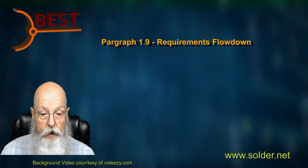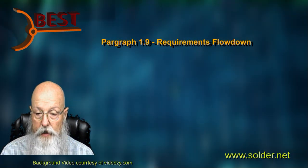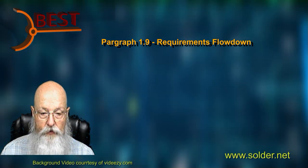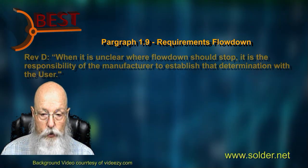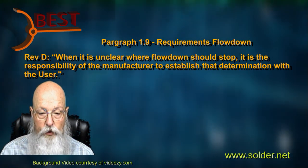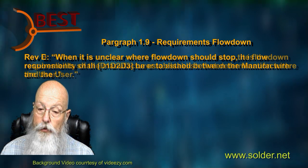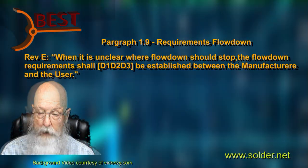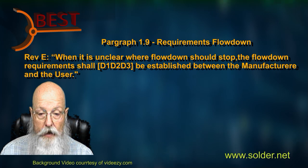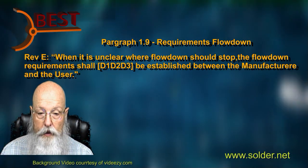Paragraph 1.9 is our next stop, where a new hard requirement has been established. In Revision D, where the flow down of the application of the 620 document was unclear, the recommendation was for the manufacturer to define the flow down. The new requirement removes ambiguity: where the flow down is unclear, the understanding shall be established between the manufacturer and the user.